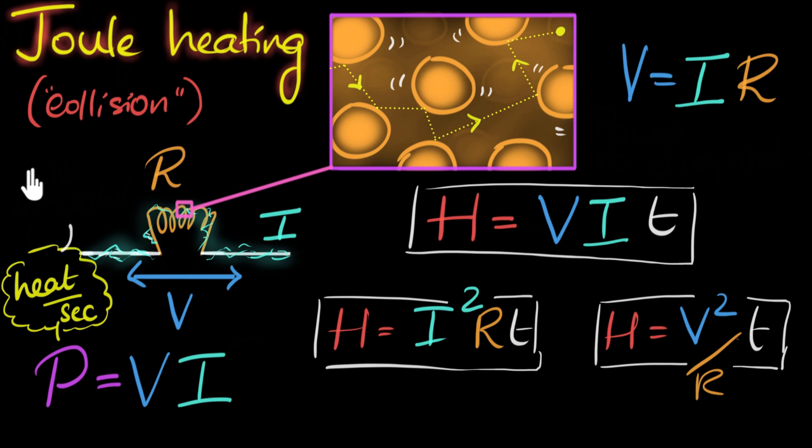So if you're ever asked to calculate the power dissipated, we basically have to calculate how much heat is generated per second.